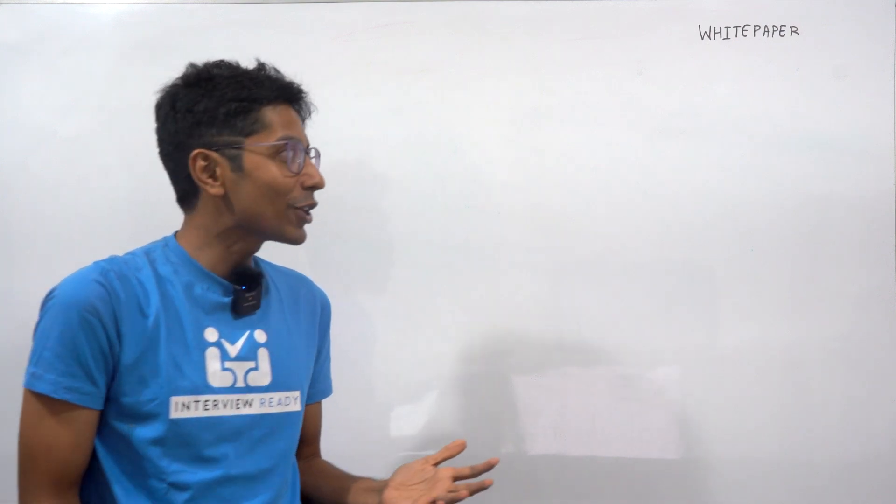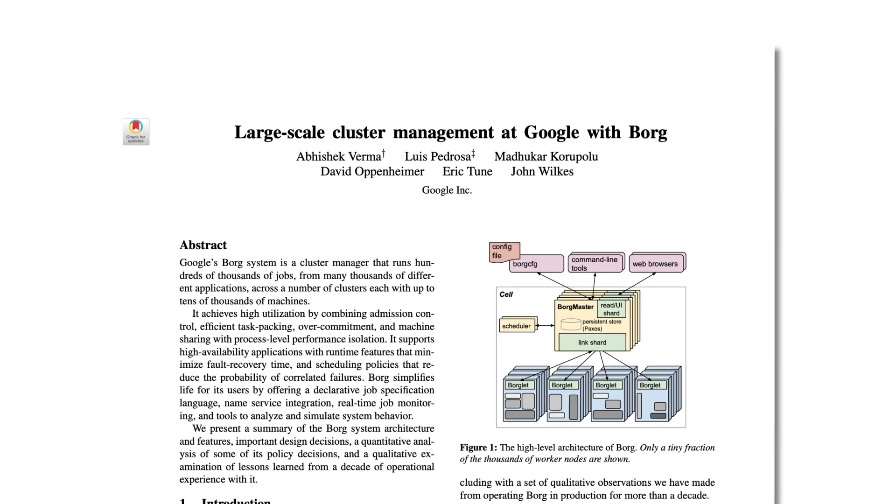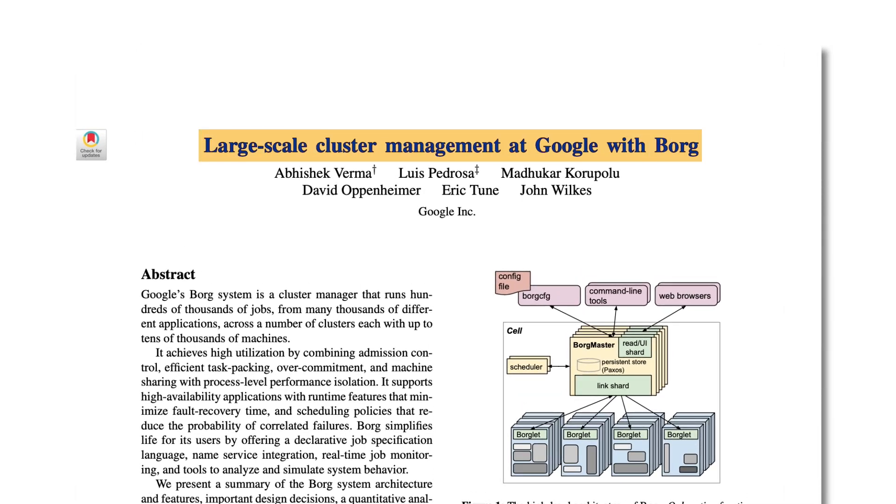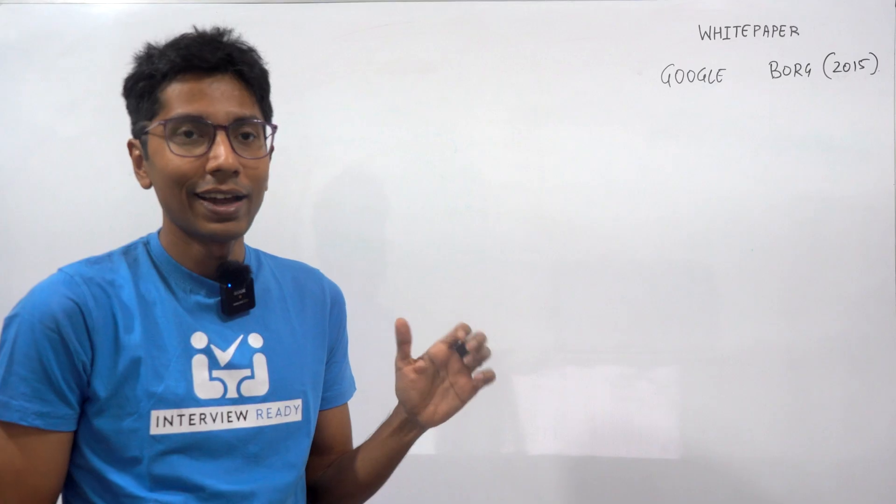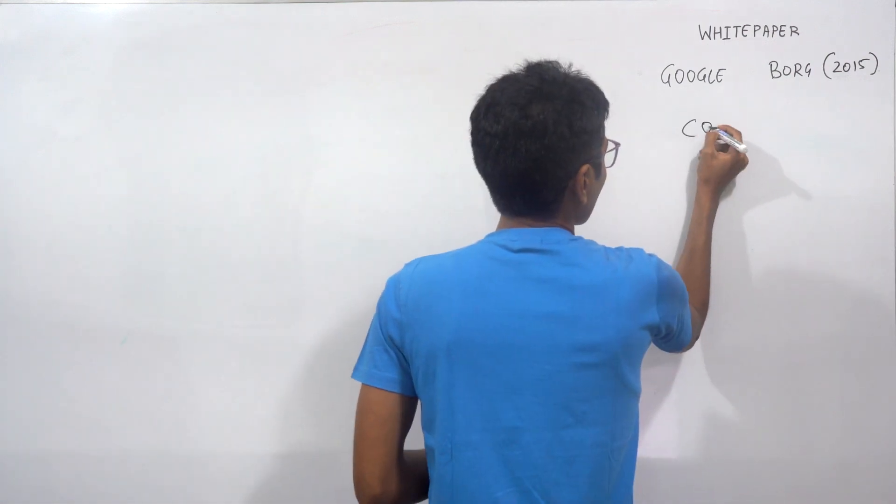Hi everyone, this is GKCS. In today's video, we'll go through Google Borg, which is a paper from 2015, but Google Borg has been there for two decades at Google since 2005. The reason why it's lasted so long is because it's an absolute core system of Google.